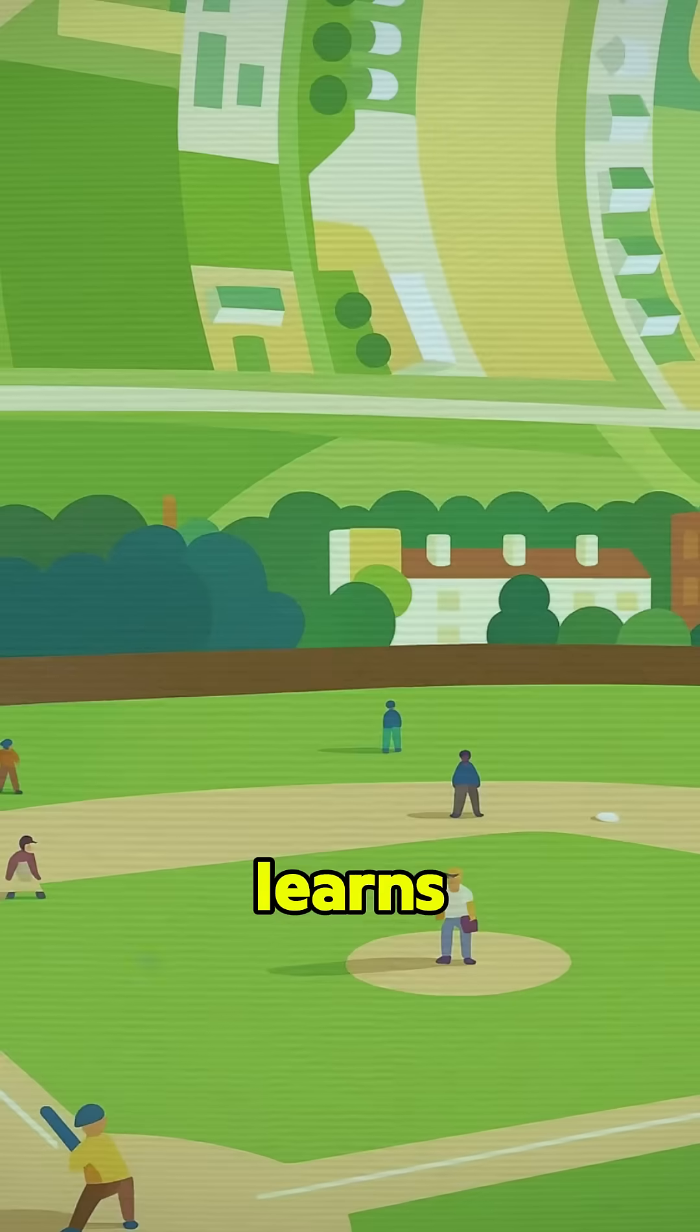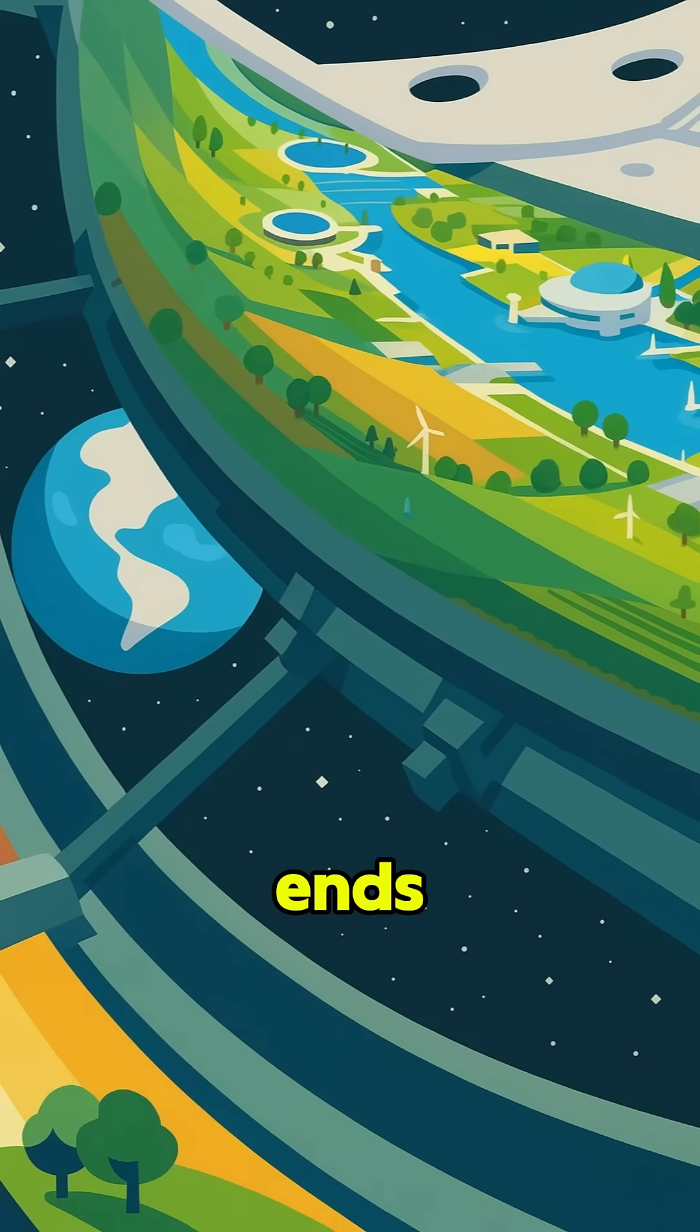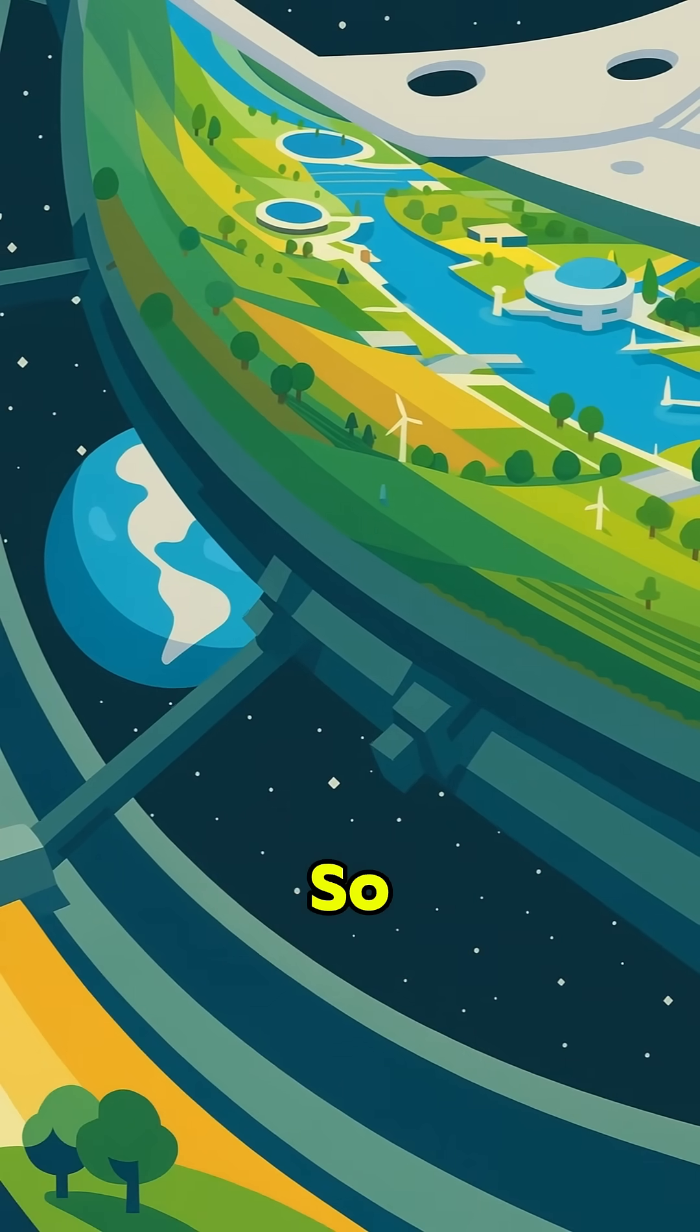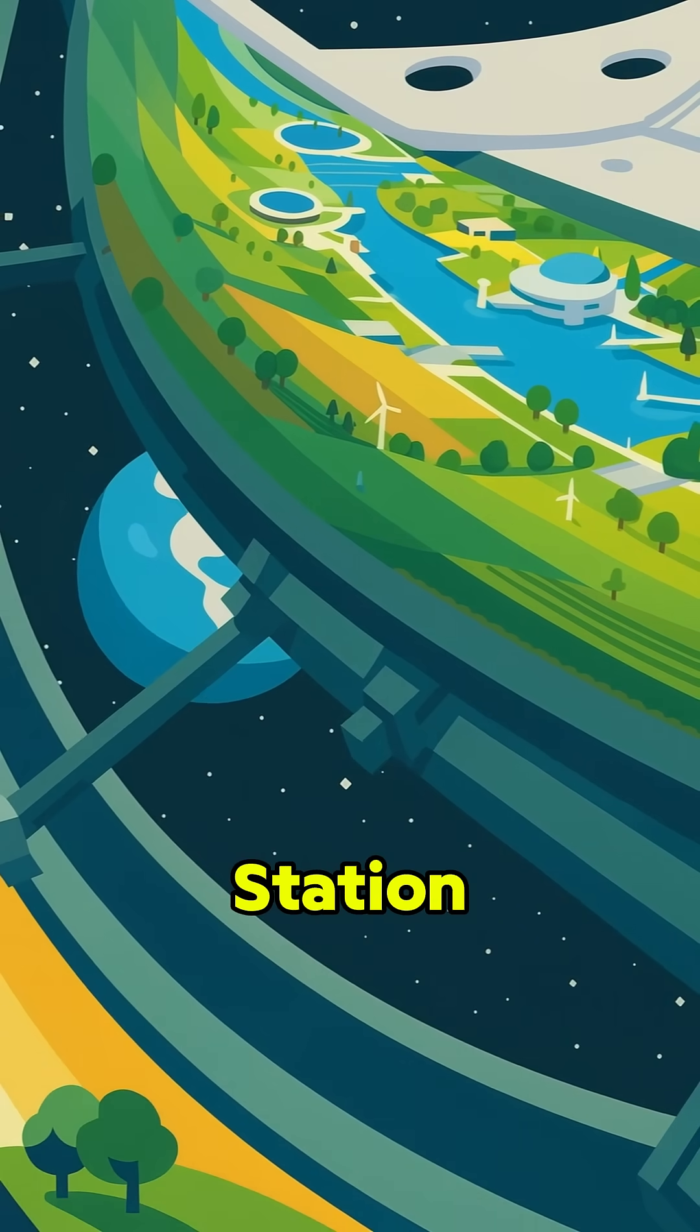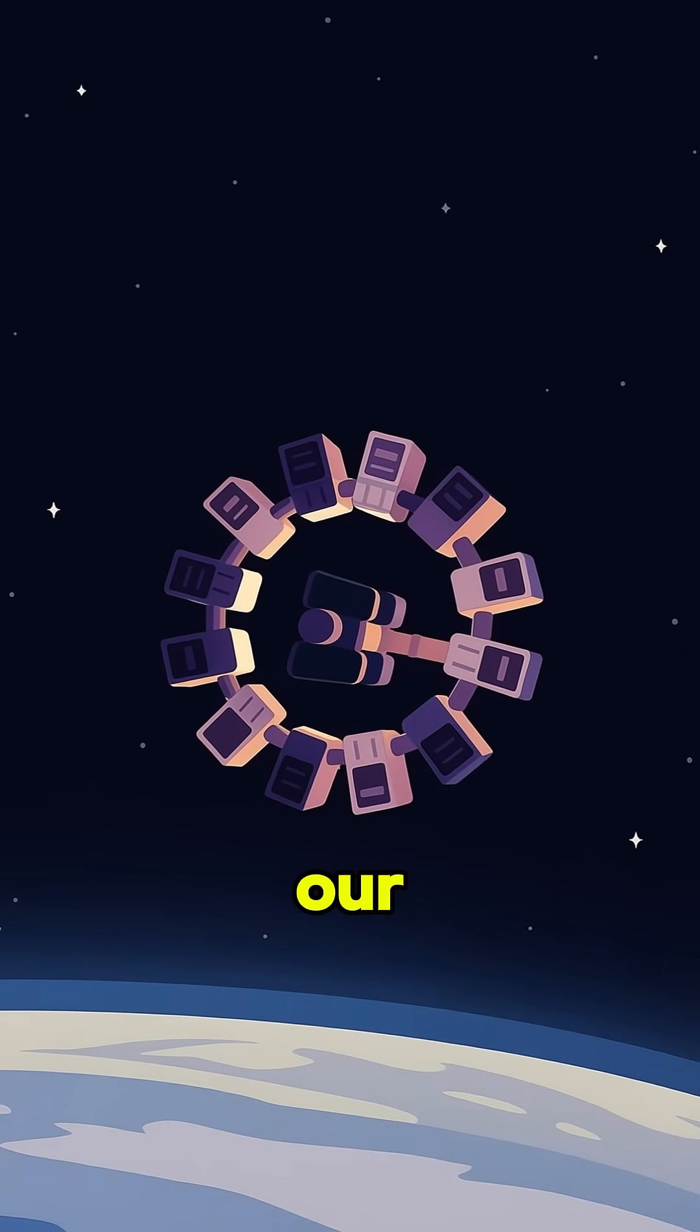Remember the ending of Interstellar? Humanity learns to control gravity, leaves Earth, and ends up living aboard a massive space station. So what if we had to live on something like Cooper Station from Interstellar? Where would we actually get our power?